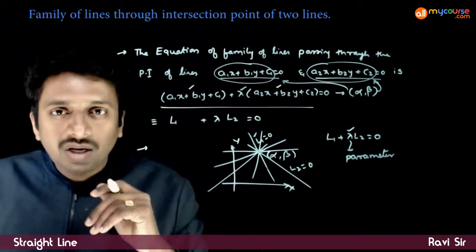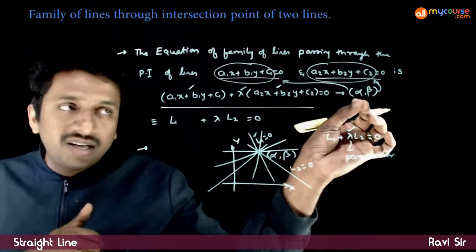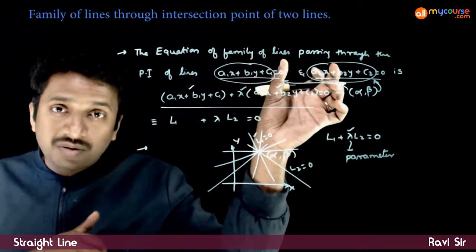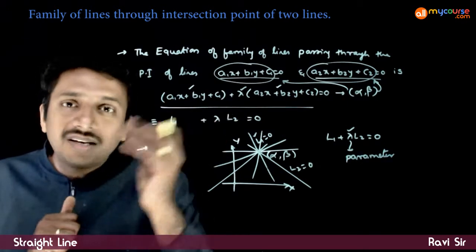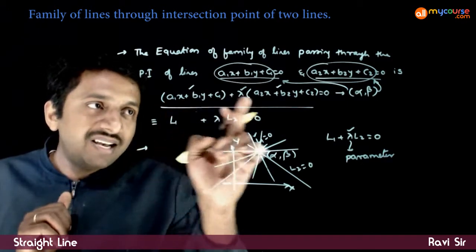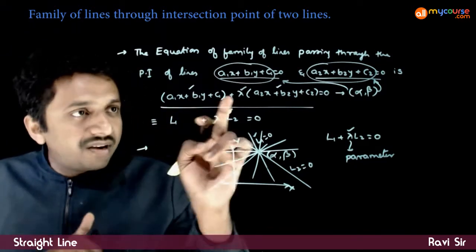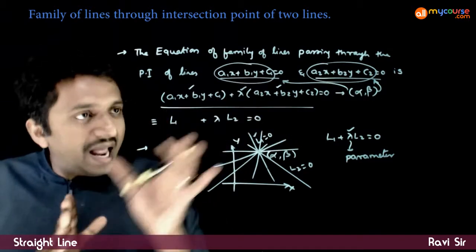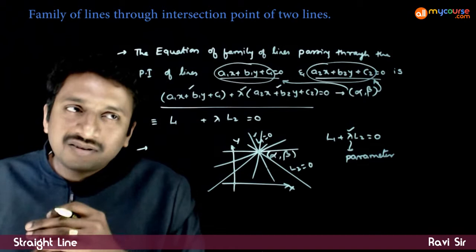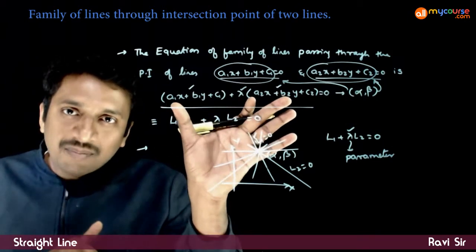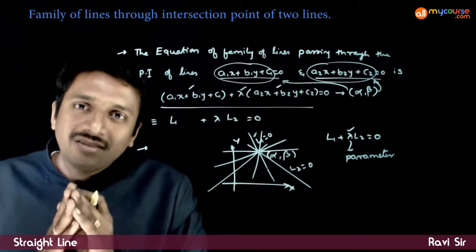For λ = 1, λ = 2, λ = 3, and so on — for every value of λ, the point (α, β), which is the point of intersection of these two lines, satisfies this equation. Furthermore, this is a linear equation in x and y, which means it is an equation of a straight line. For every value of λ, this is a straight line passing through (α, β). That means this is the family of lines passing through the point of intersection of the two given lines.